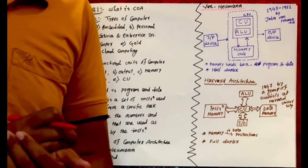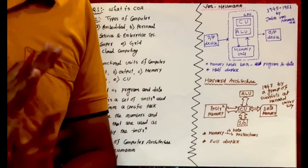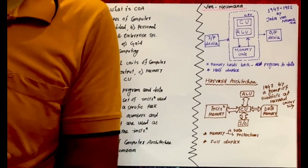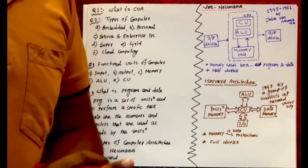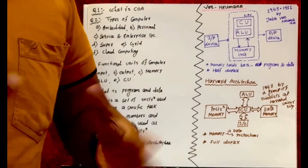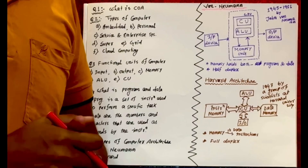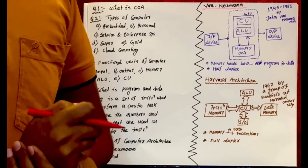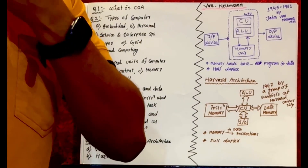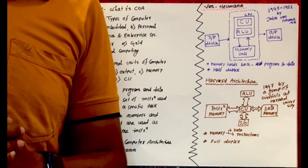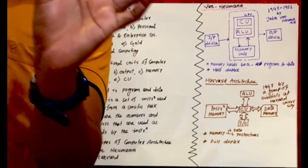I'm starting the very first class of COA today. Most of the things we'll discuss you already know, so I'll try to finish this class as quickly as possible. The very first question people ask about COA is: what is COA? As a computer science student, you should be able to answer this. The full form of COA is Computer Organization and Architecture — two important terms: organization and architecture.